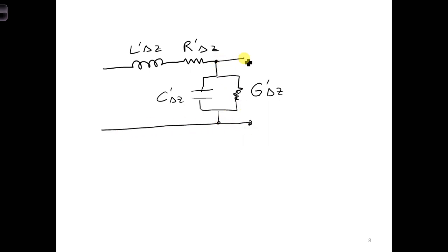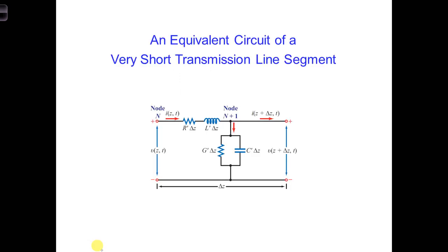So our equivalent circuit, when the transmission line is lossy, would look like this. There. And this is a lot cleaner here on this next slide.